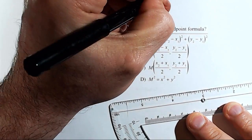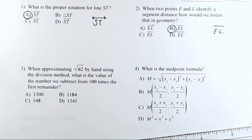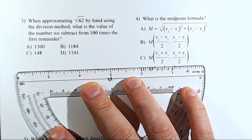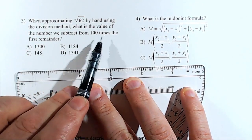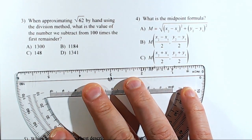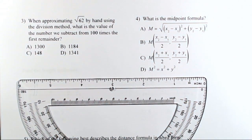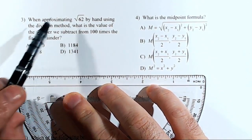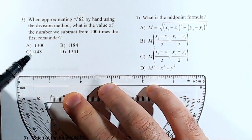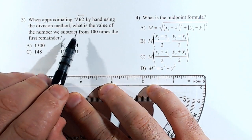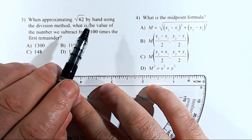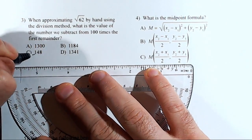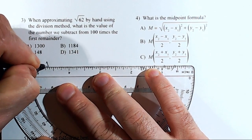Number three: when approximating the square root of 62 by hand using the division method, what is the value of the number we subtract from 100 times the first remainder? We're going to follow the division method and see what we get. Pay attention to what it's asking us for — the value of the number we subtract from 100 times the remainder.